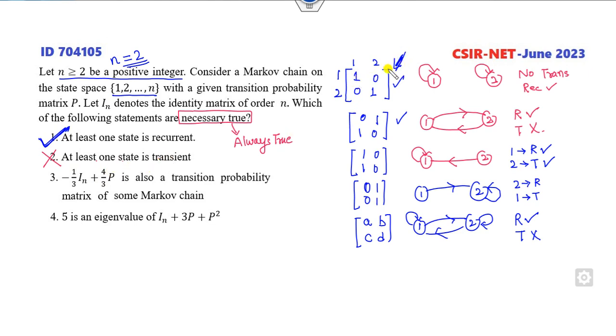In this case your state diagram will be like this. And you can see all are recurrent states. There is no transient state. So here in all these 2×2 matrices there is no other option. In all the cases there is at least one recurrent state - this is the correct option. So at least one state is recurrent.